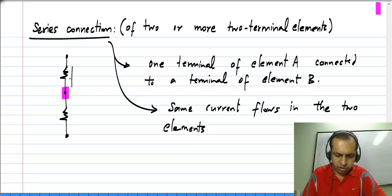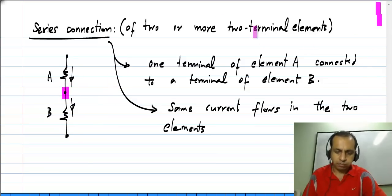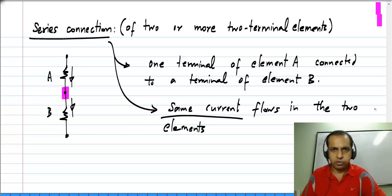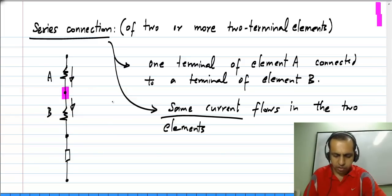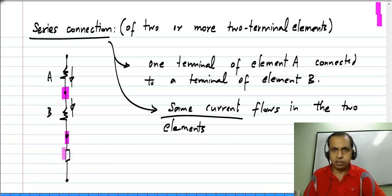By Kirchhoff's current law, whatever current is flowing in element A will also flow in element B, because they are connected to the same node and nothing else is connected to it. This is known as series connection — the important property is that the same current flows through them. You could have a number of elements in series one after another; each node will have two elements connected to it and nothing else. The current in each element will be exactly the same, as enforced by Kirchhoff's current law.